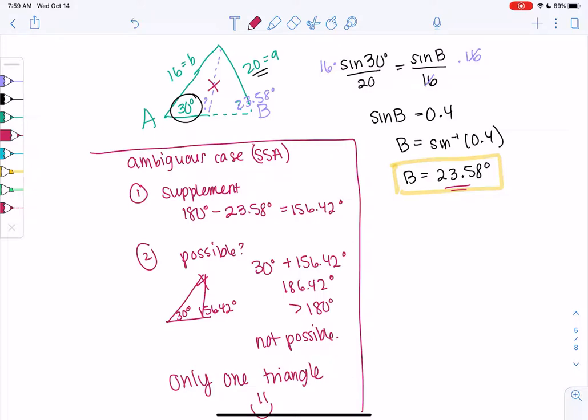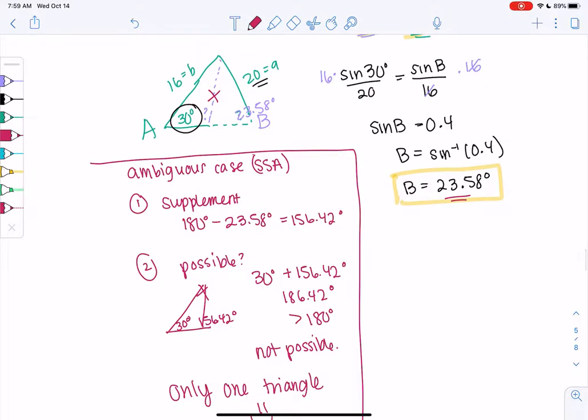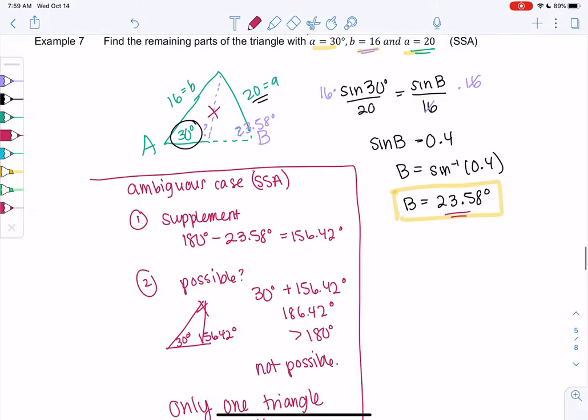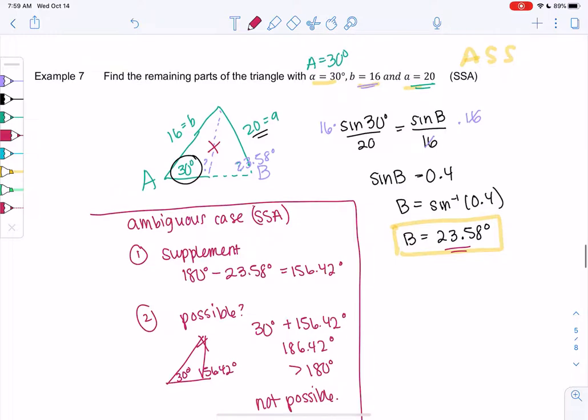And we've solved almost everything. We found AB. We found capital A, capital B. We can find little C really fast, or big C really fast. Because it's just 180 minus the other two angles. And then we can use law of sines to find that last side. So 180 minus 30 minus 23.58, 126.42 degrees.